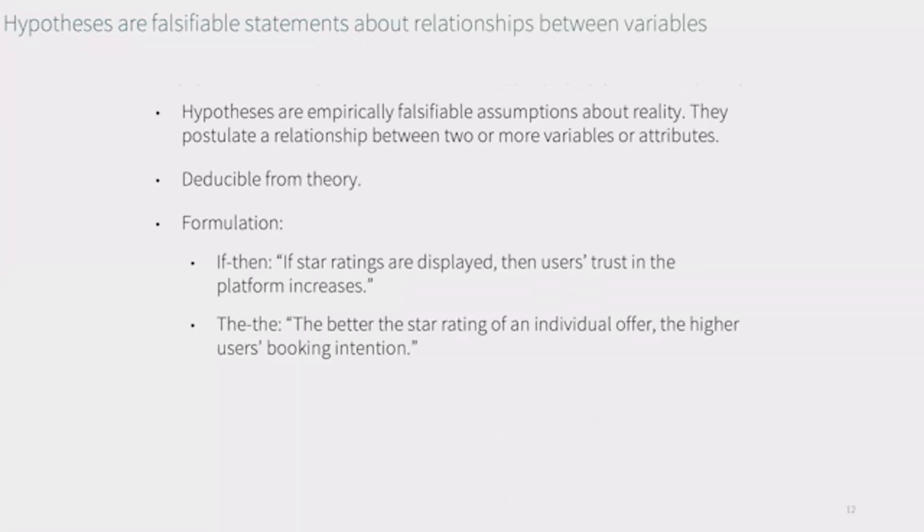Being the starting point for experimental research, let's look at what hypotheses are. Hypotheses can be defined as empirically falsifiable assumptions about reality. They presume relationships between variables or attributes. And we usually get them from theory. Essentially, there are two different ways to formulate our hypotheses. Either we can make if-then statements, for example, if star ratings are displayed, then users' trust in the platform increases.